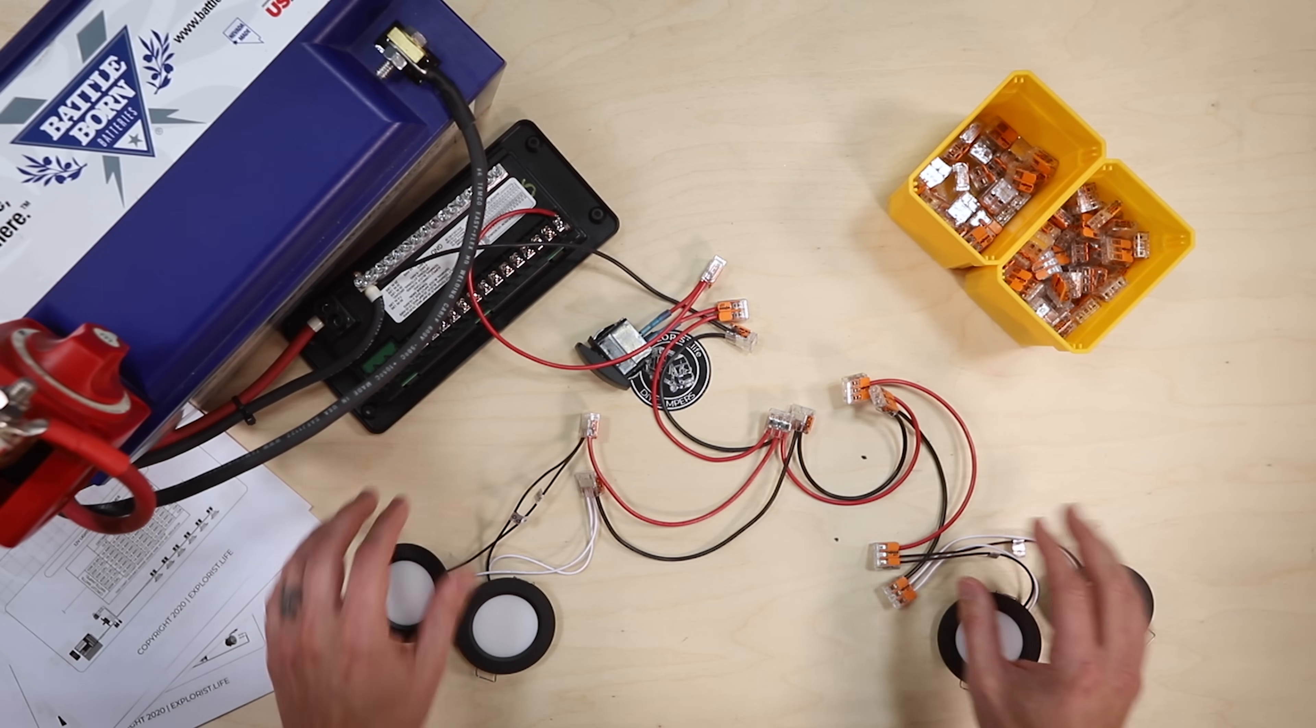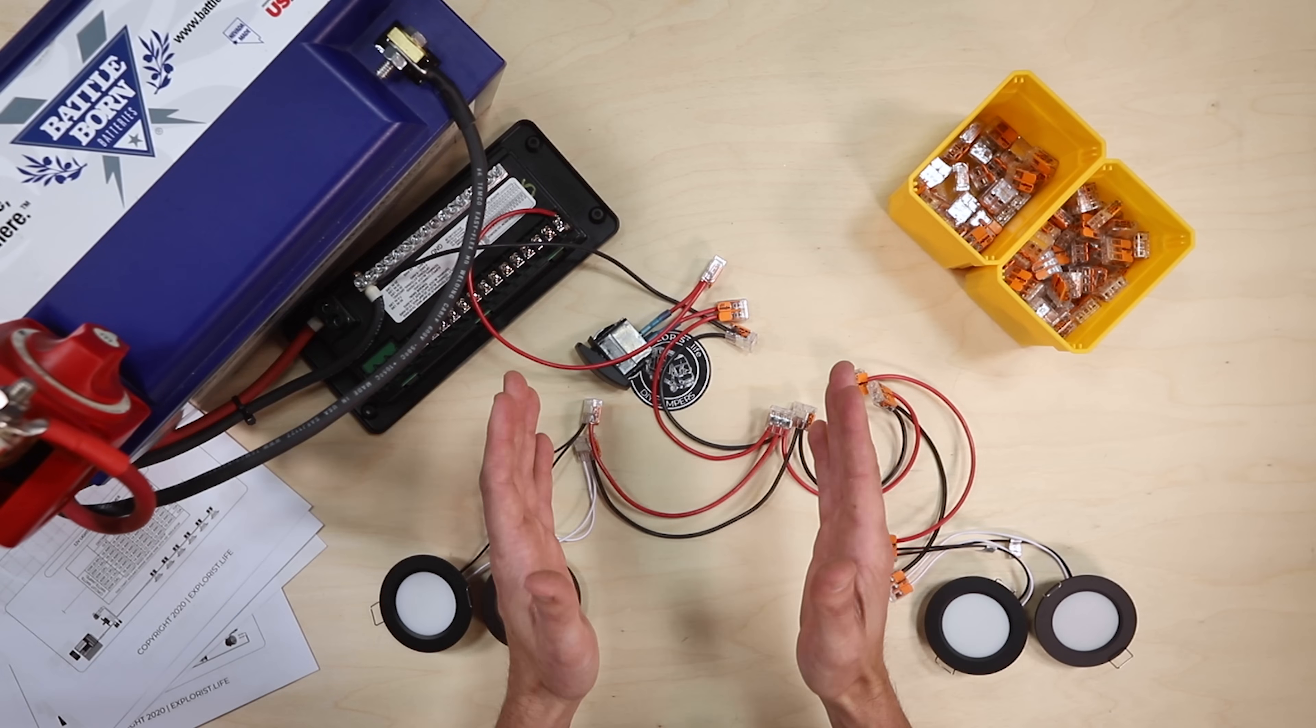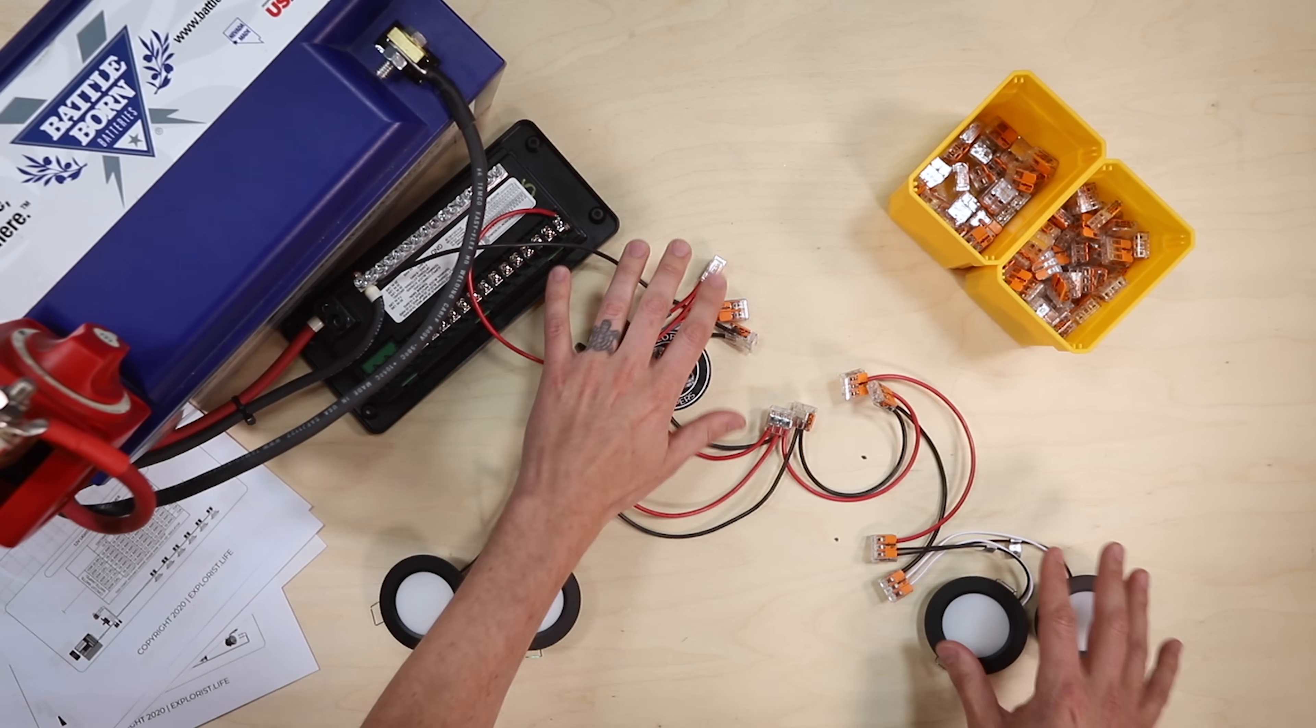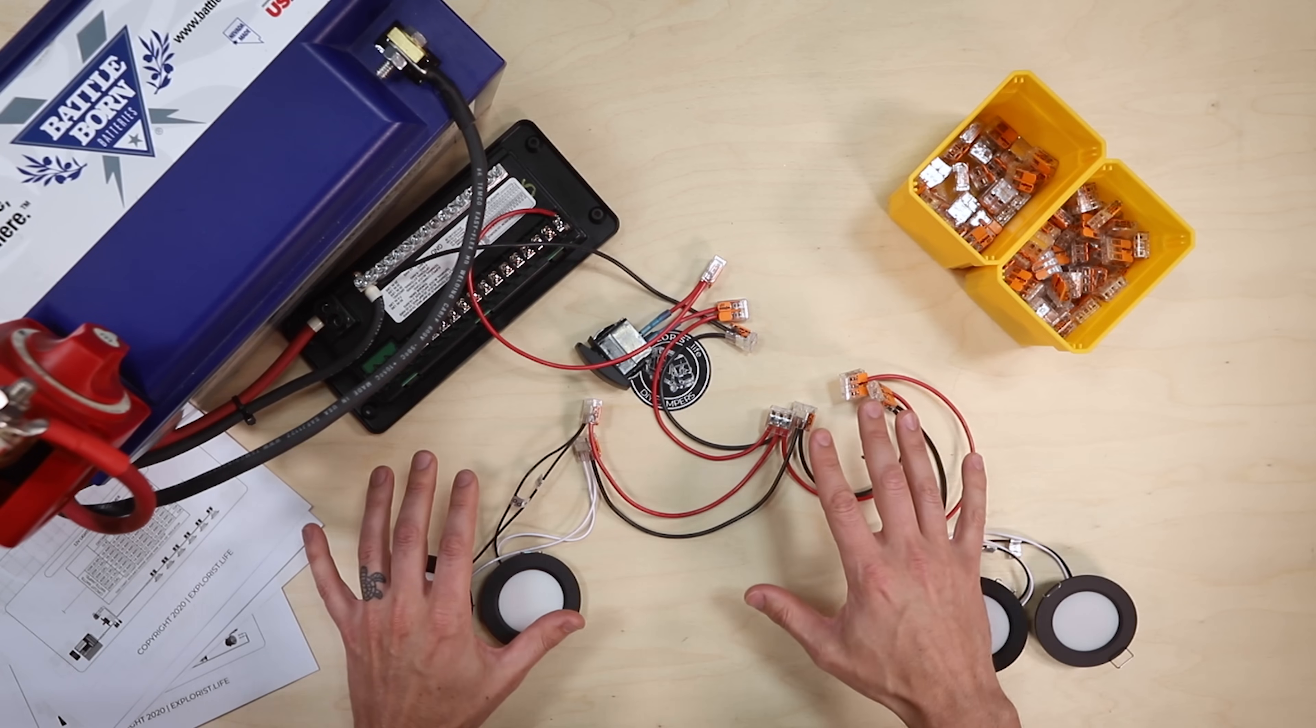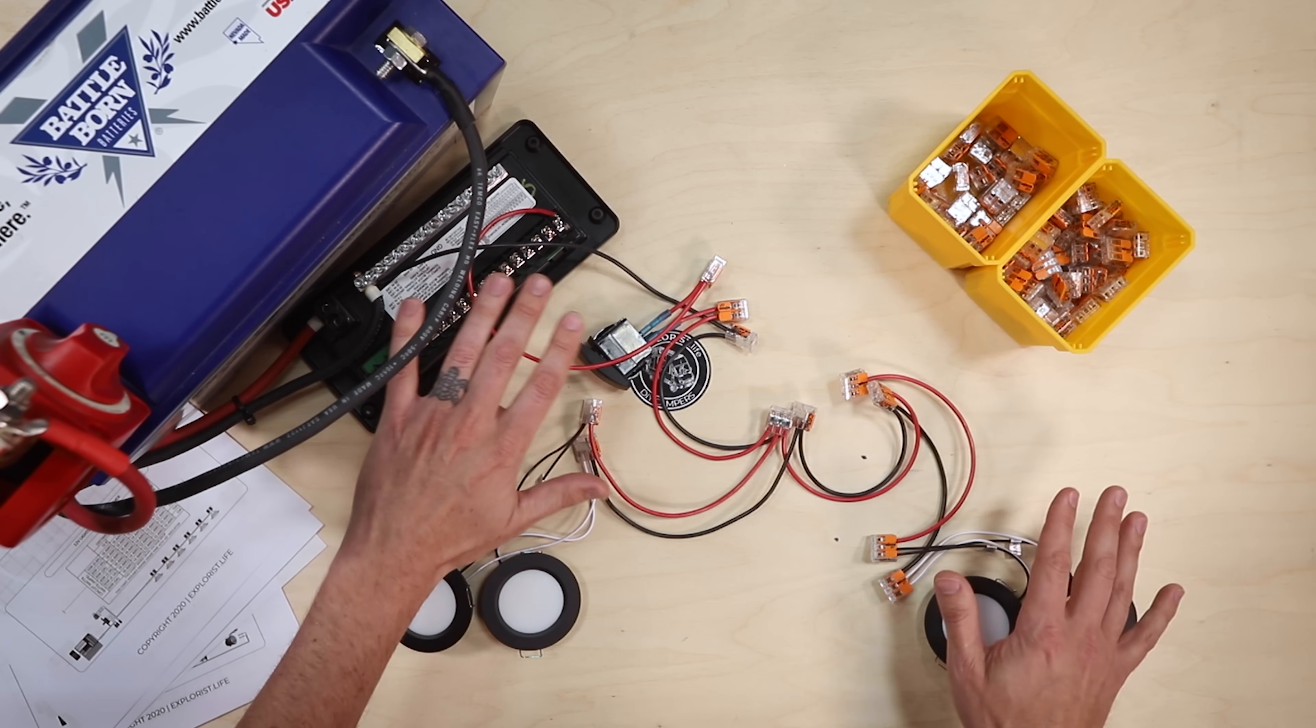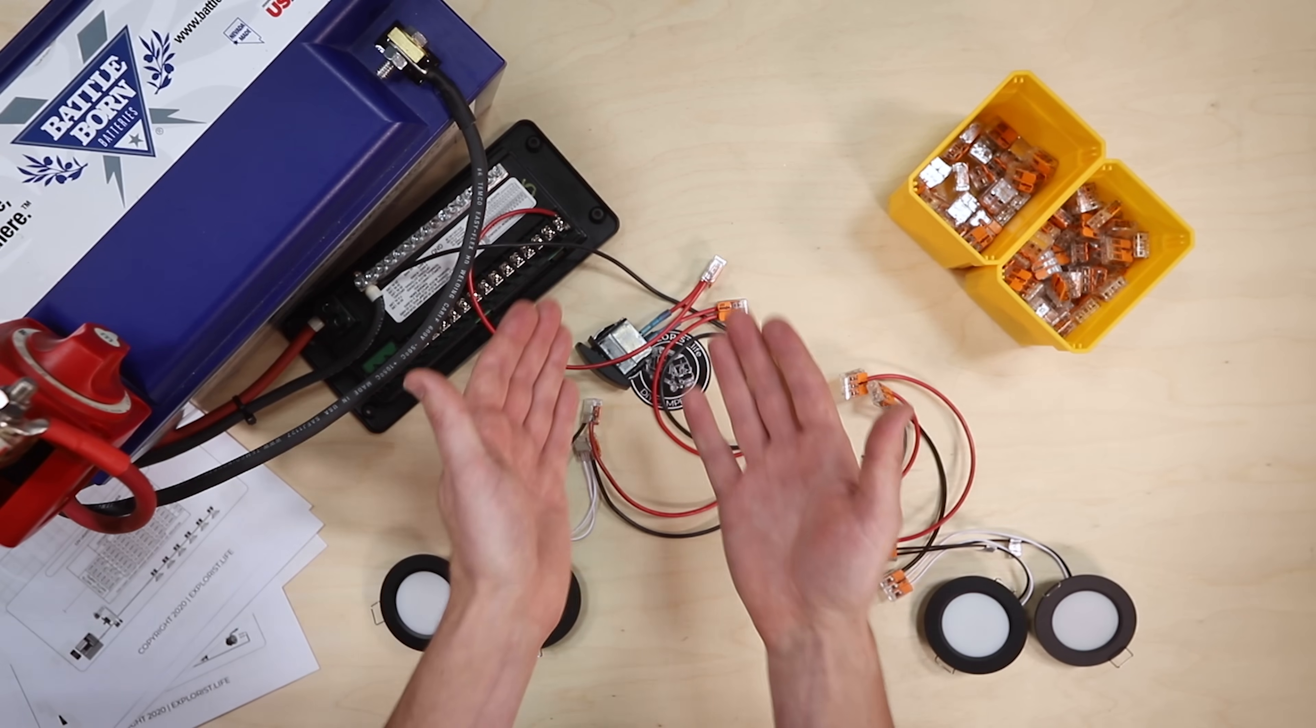This is how this is actually going to look whenever we get it into the van, as we're going to have pairs of lights going down the length of the van. So we're going to go ahead and install all this stuff in the van in its proper spots, and then circle back around with all of you so that you can see how this is actually going to look and how it's actually wired when it's a little harder to see inside the van.